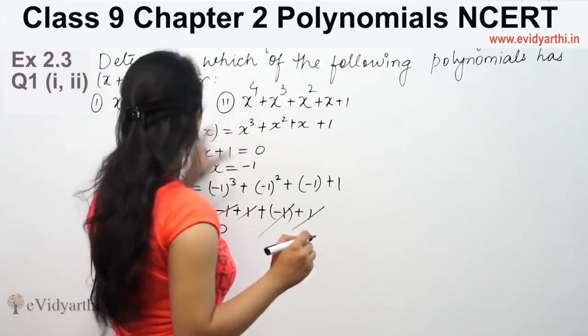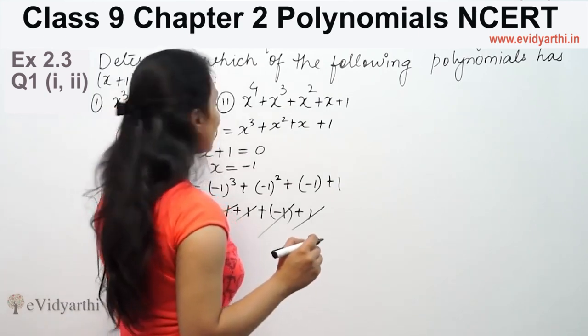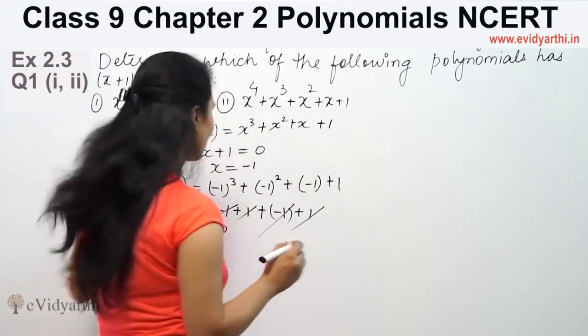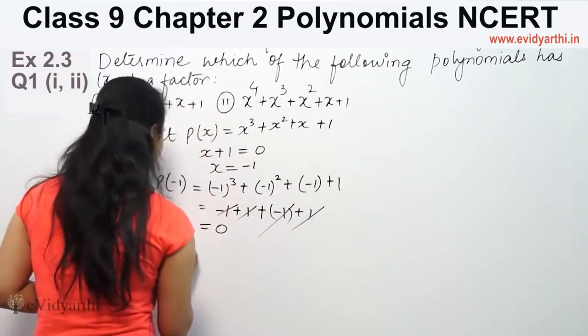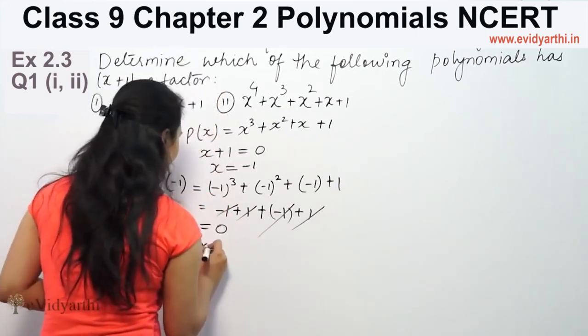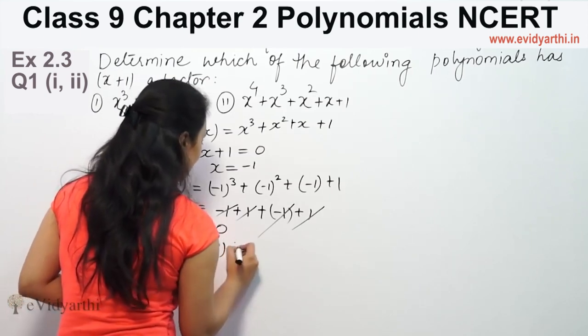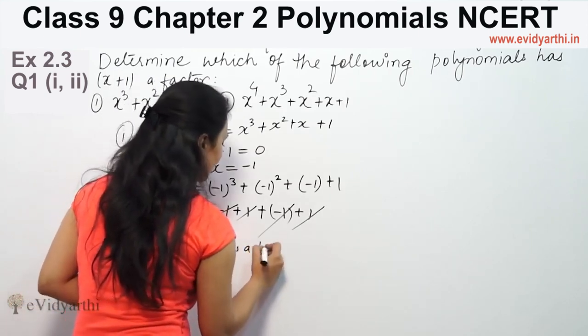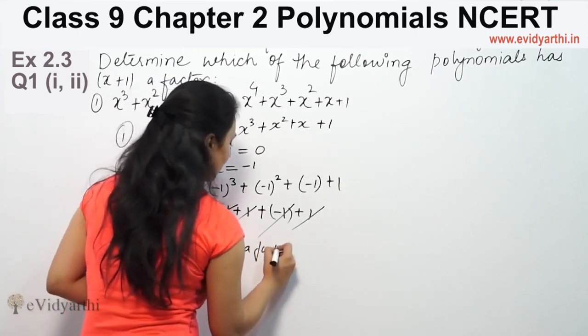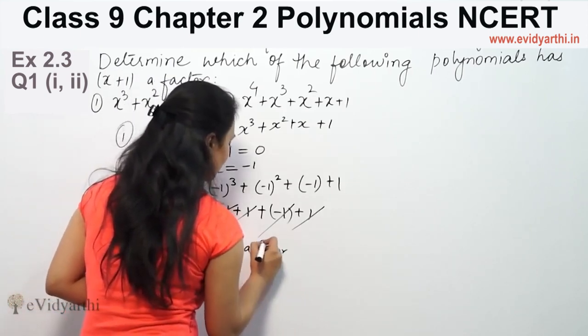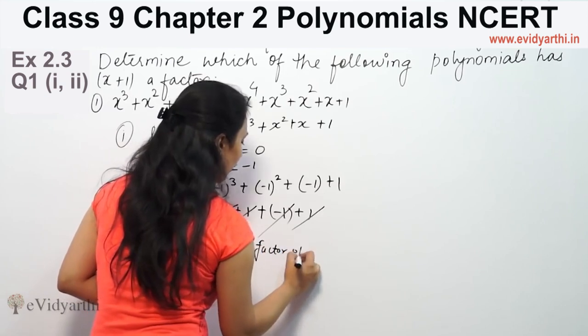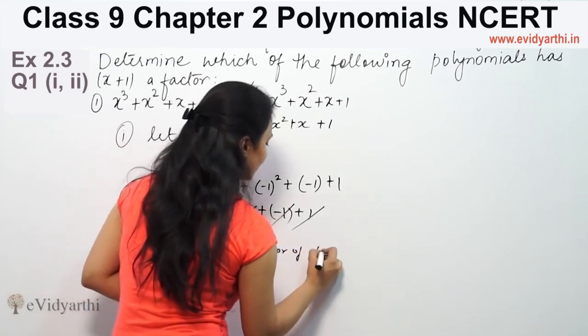The answer is 0, which means x plus 1 is a factor of this polynomial. Therefore, x plus 1 is a factor of p(x).